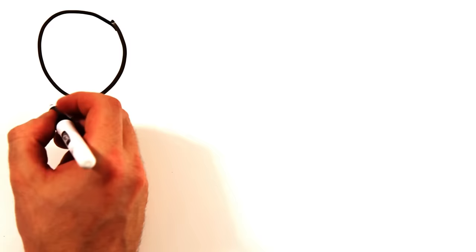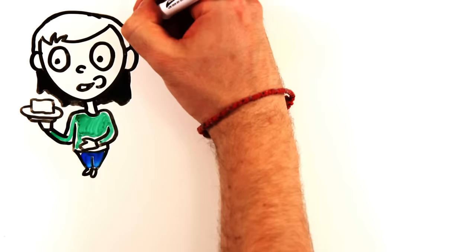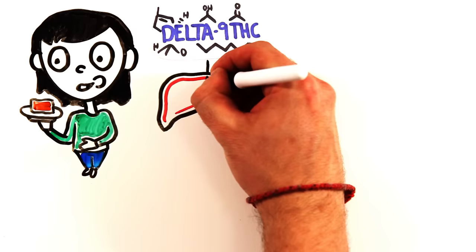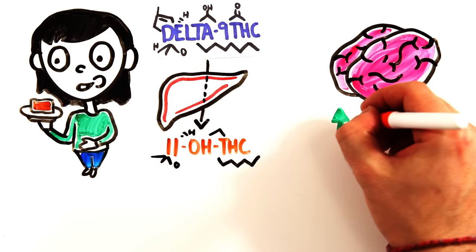This is because when you eat edible weed, the THC is first metabolized by the liver before entering the bloodstream, and here, Delta-9-THC also becomes 11-OH-THC, which passes the brain barrier more rapidly and is a more potent chemical.